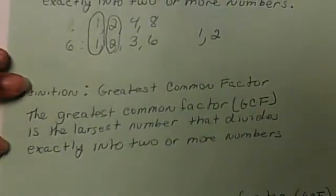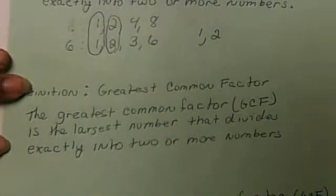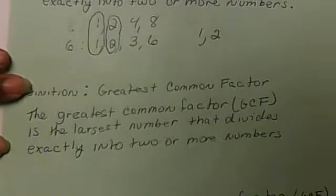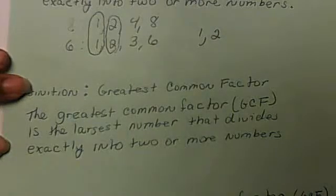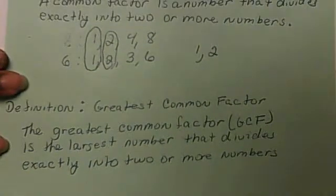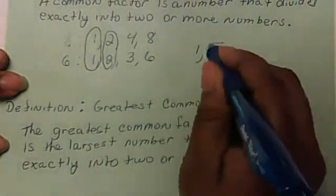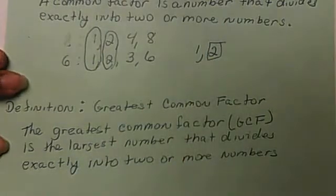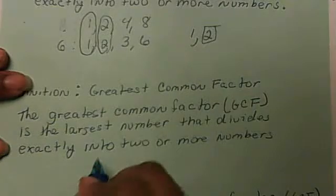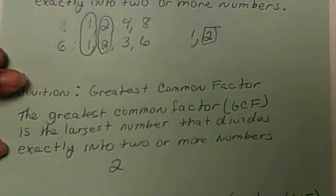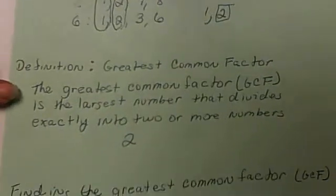The greatest common factor is the largest number that divides exactly into two or more numbers. So for our example here, our greatest common factor would be 2. That's the greatest one that's in common between those two numbers.